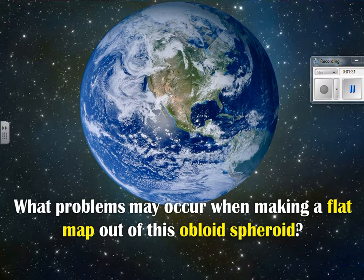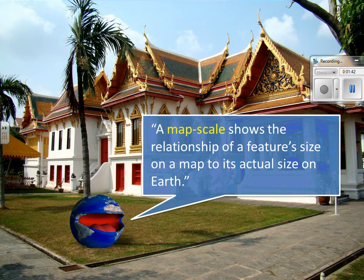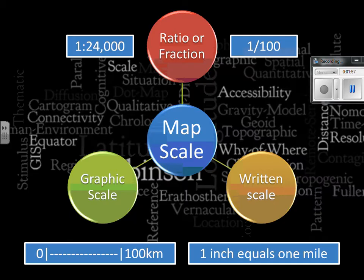We're going to deal with that problem in several different ways. One way is through map scale, which means we make a feature size on a map and tell the viewer what that relates to in actuality on the Earth. It can be done several ways: you might have a ratio like one size on the map equals 24,000 size in reality, or a fraction like one to a hundred, or a line showing that 10 centimeters equals a certain number of miles or kilometers.